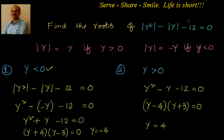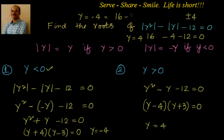The roots of the equation |y|² minus |y| minus 12 = 0 are y = ±4. Verification for y = 4: 16 minus 4 minus 12 = 0. Verification for y = -4: |(-4)|² minus |(-4)| minus 12 = 16 minus 4 minus 12 = 0. Both solutions are confirmed, so the final roots are plus or minus 4.